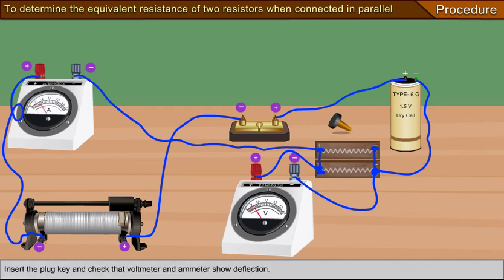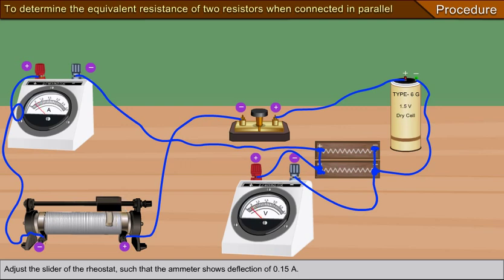Insert the plug key and check that voltmeter and ammeter show deflection. Adjust the slider of the rheostat such that the ammeter shows deflection of 0.15 ampere.